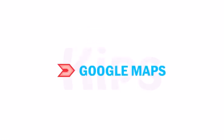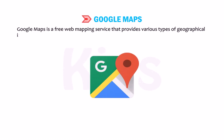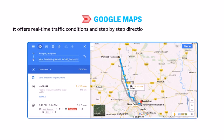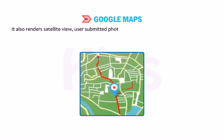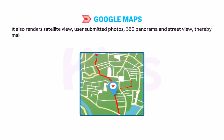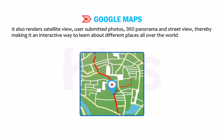Let's talk about Google Maps. Google Maps is a free web mapping service that provides various types of geographical information. It offers real-time traffic conditions and step-by-step directions to reach a destination by any mode of transportation. It also renders satellite view, user-submitted photos, 360 panorama and street view, making it an interactive way to learn about different places all over the world.